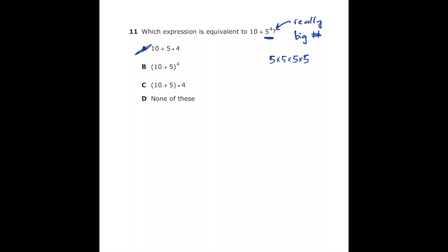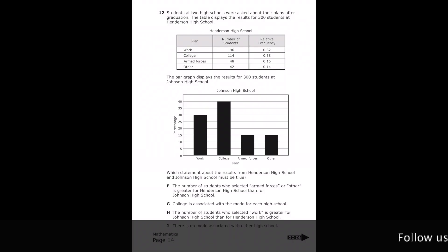Letter B: using order of operations, we'd do 10 plus 5 in parentheses first, then raise it to the fourth power — that's obviously not the same as 10 plus 5 to the fourth power. Letter C is 10 plus 5 in parentheses, which is 15 times 4, which is 60 — not a really big number. So without doing any more math, the correct answer is letter D.